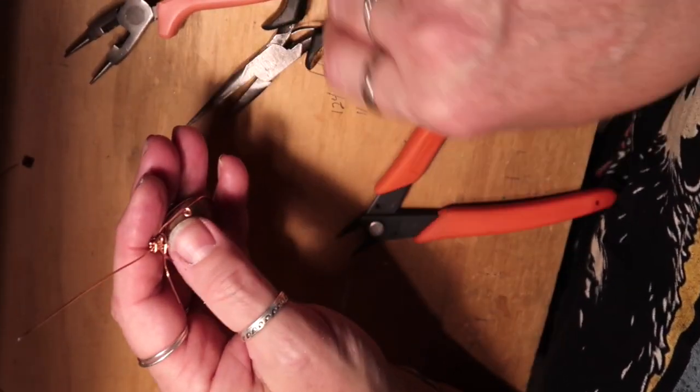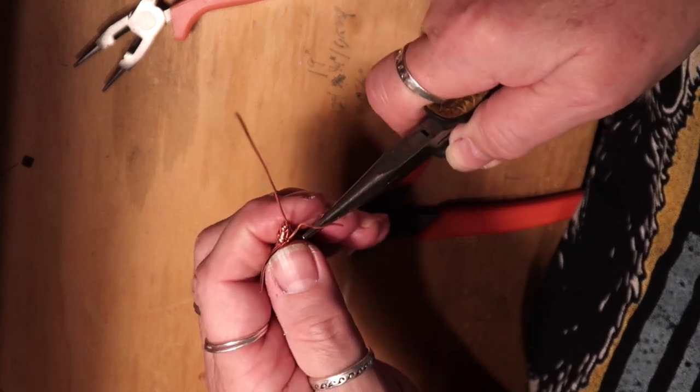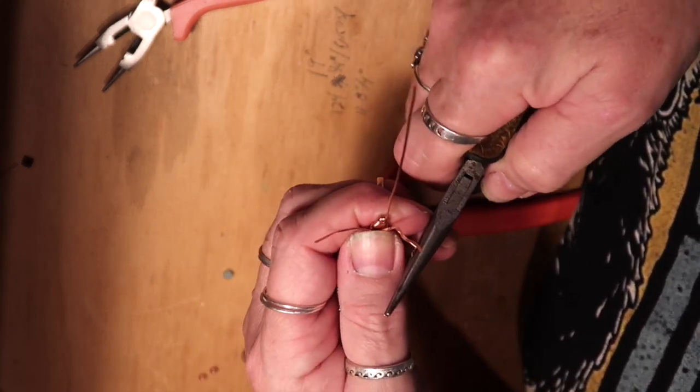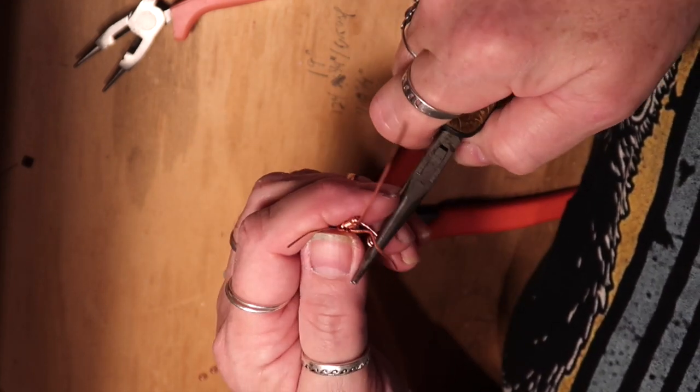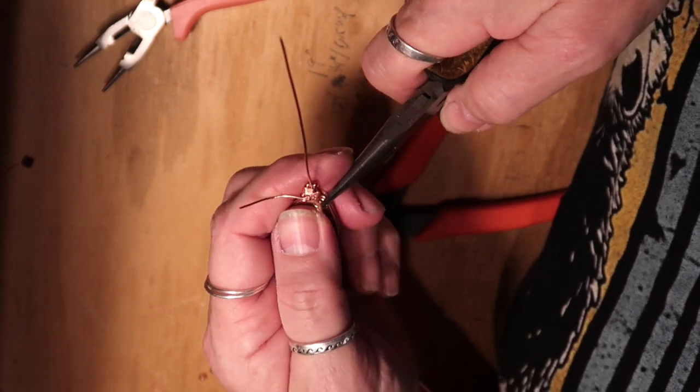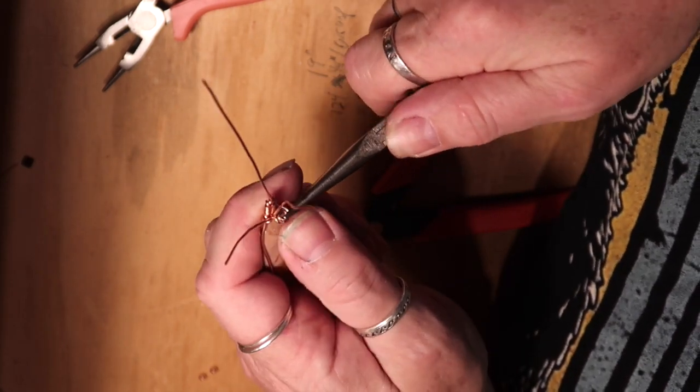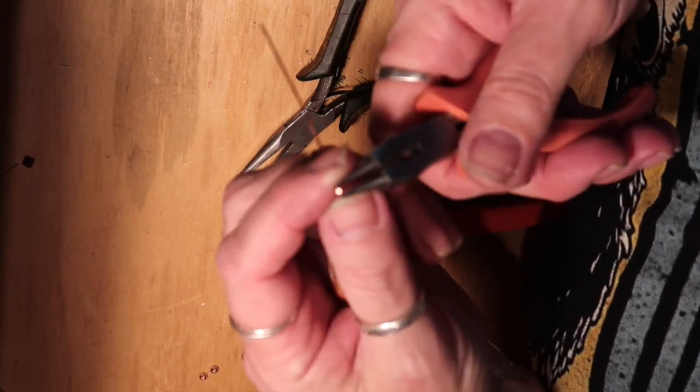Okay. I've got that started with the chain nose and now I'm just going to make a spiral by just grabbing and turning it a little bit at a time. And then push it in place with my finger. Then I'll make another one with this one.